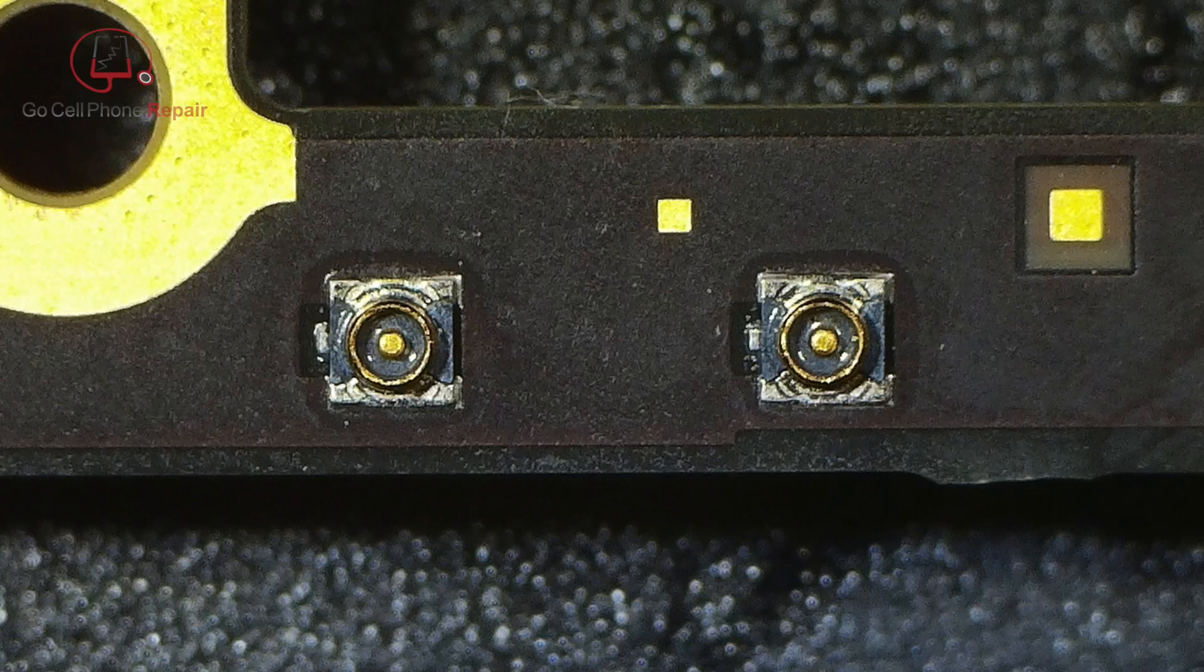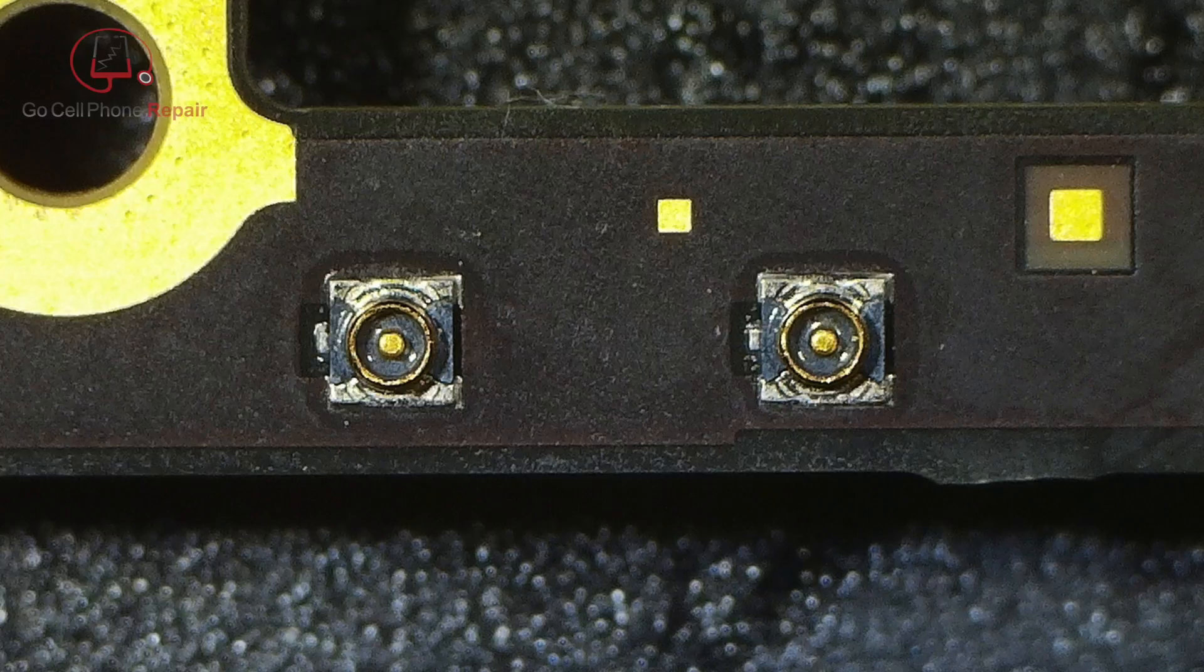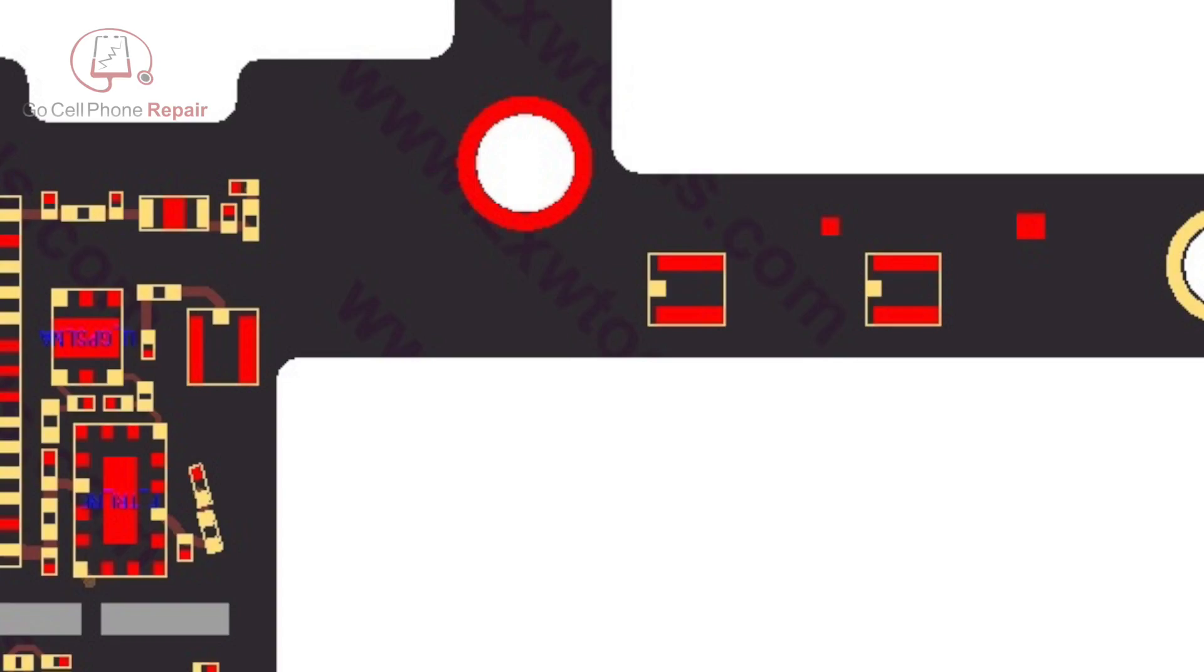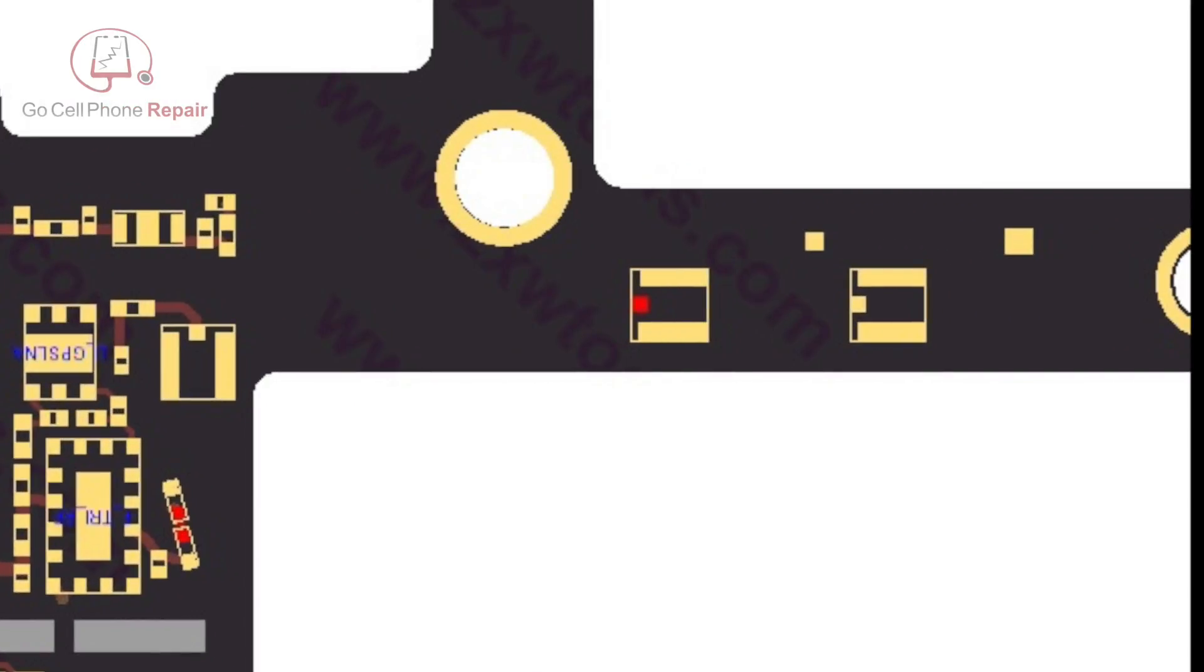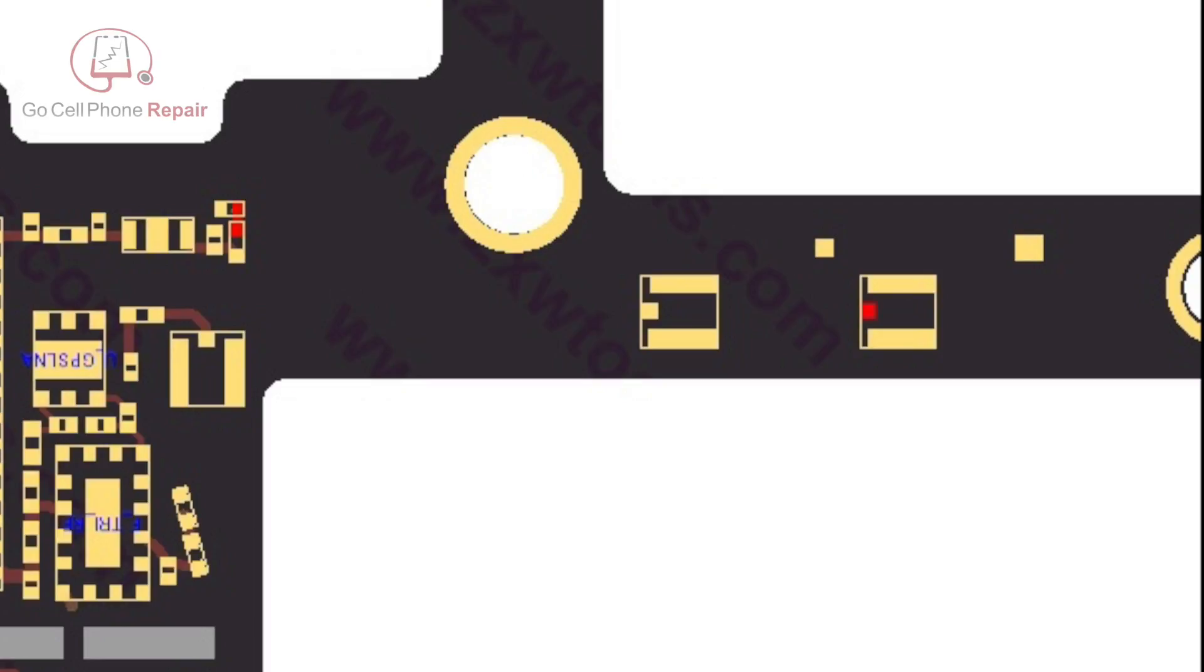These connectors have a very small amount of solder underneath them holding them onto the logic board. That's why they tend to pop off so easily. If you take a look at a schematic, you can see where in the middle area of the top of the board, these things connect to ground on the outside, and then on the inside they actually go to different locations.